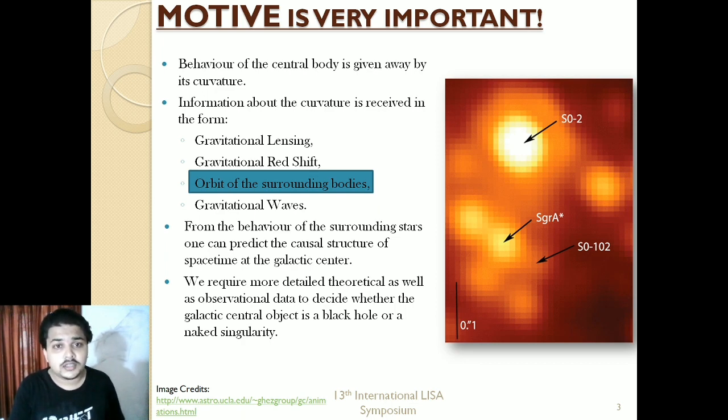A body tends to move on a specific path, be it a human being, an animal, or a massive object like a star itself. This tendency of that body to move on a specific path gives away a lot of information about the surroundings. Similarly, when a star orbits an ultra compact object, it gives away information in the form of the curvature caused by the central body. Different bodies like a black hole and a naked singularity will have different curvature, and thus the stars orbiting them will be moving in different fashion.